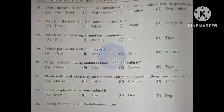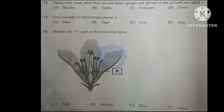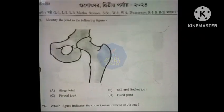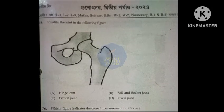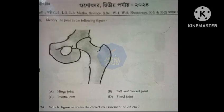Option B, stamen. Identify the joint in the following figure: Option B, ball and socket joint.